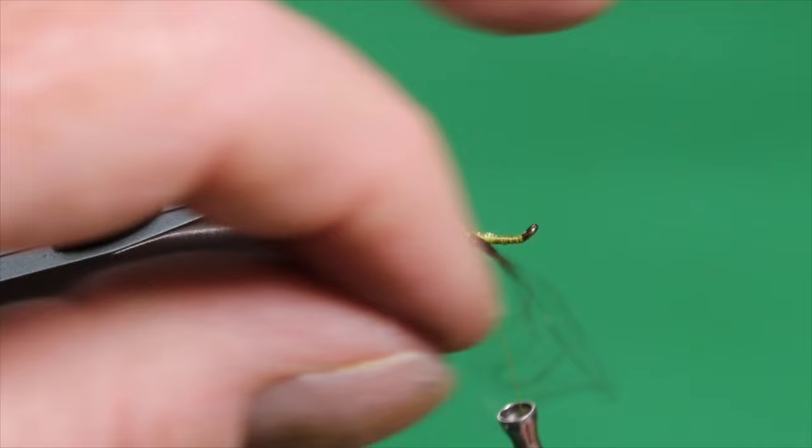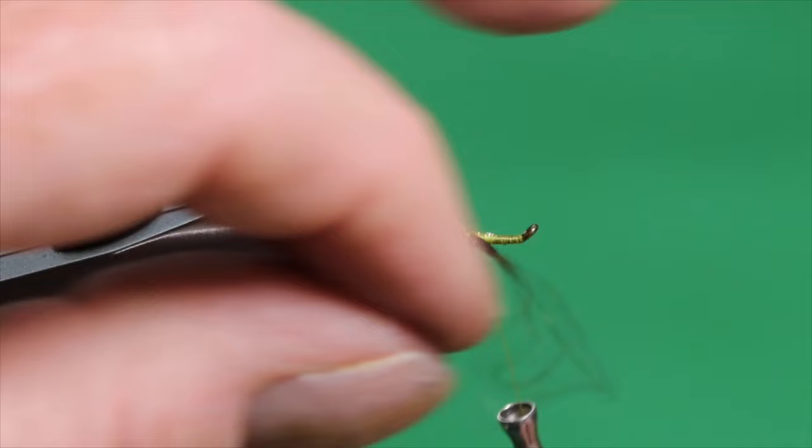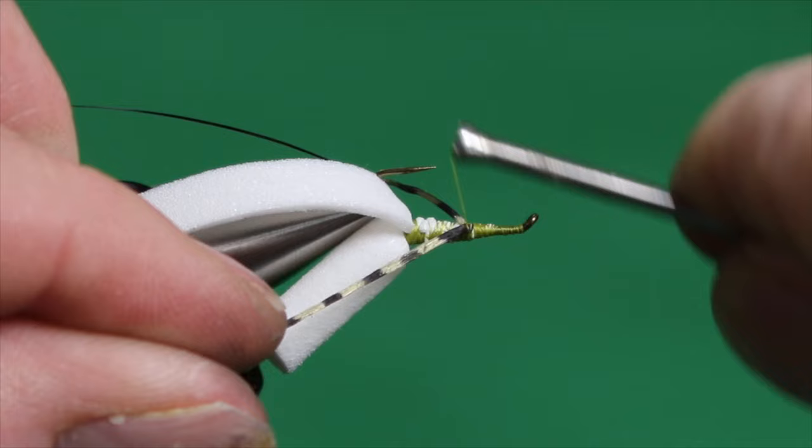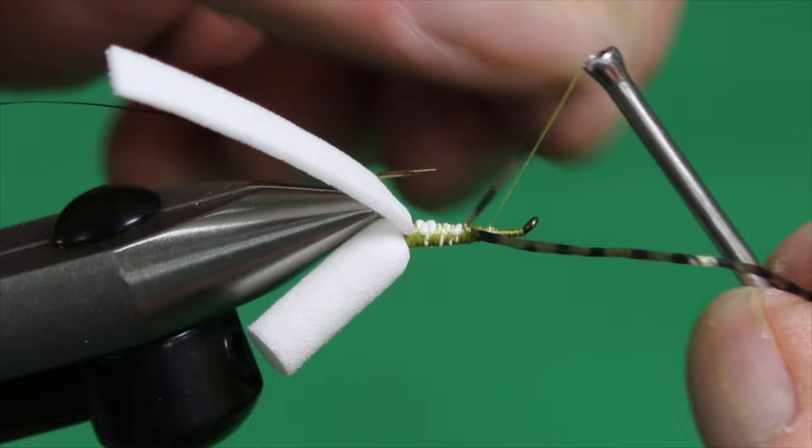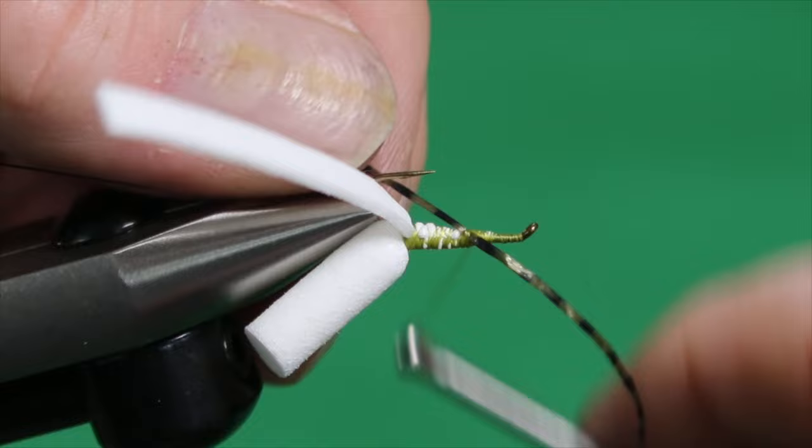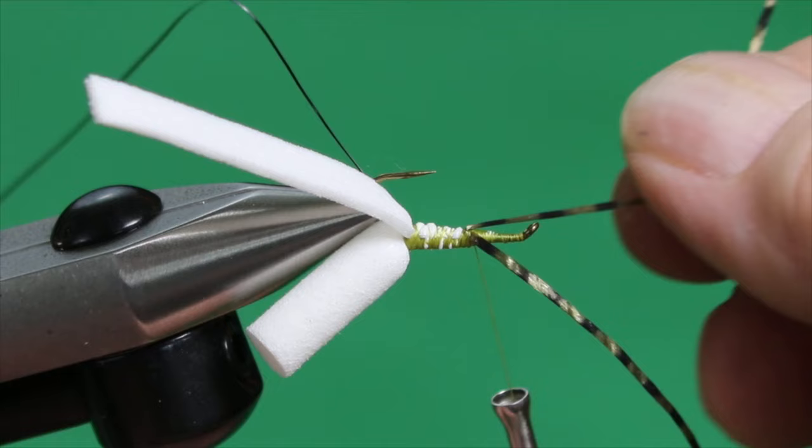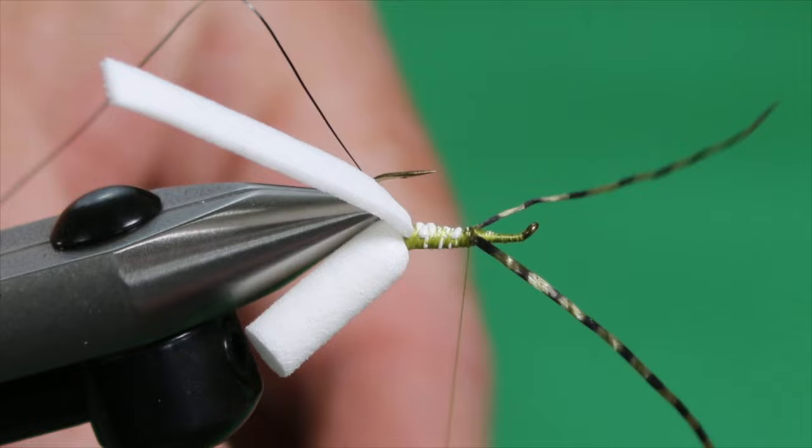Then I'm going to work on positioning the far side leg. So what I'm going to do here is I'm going to work that thread back right up to against the legs. And then I'm going to go over the top, over the back side, and over to the far side towards the bend. At least that's the plan. I'm going to hold that leg, manipulate it, come up, over the top, and towards the back.